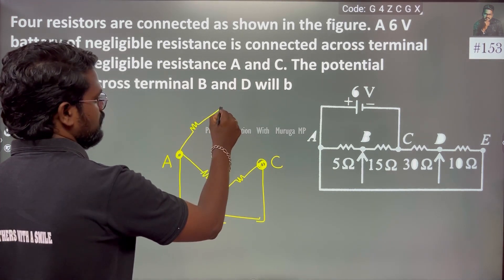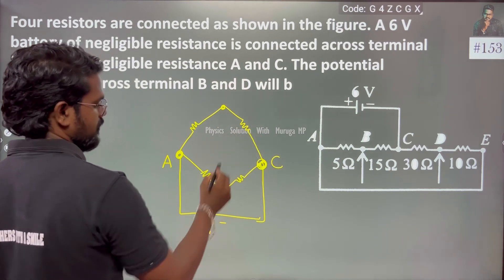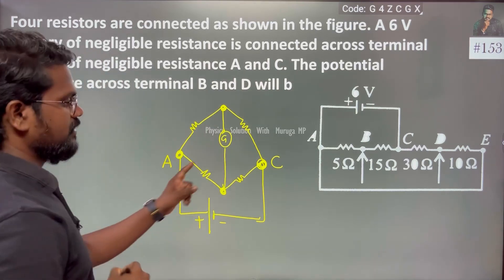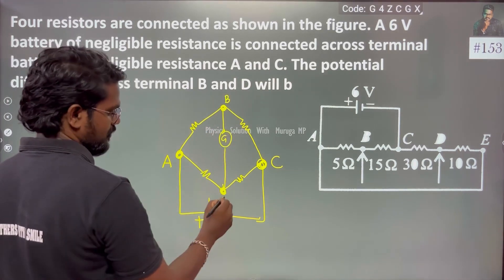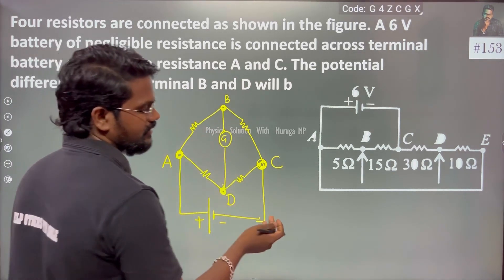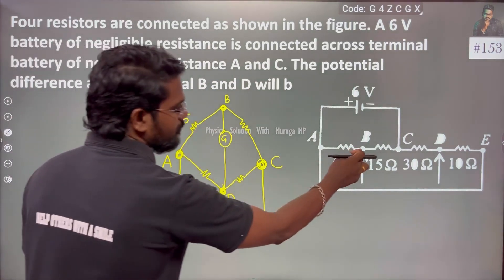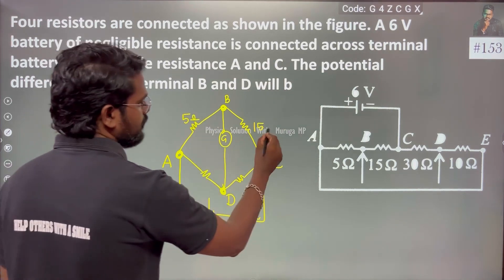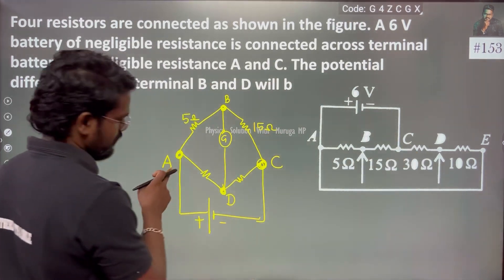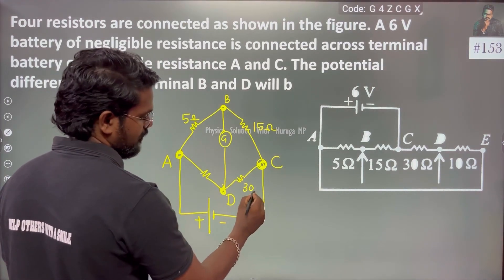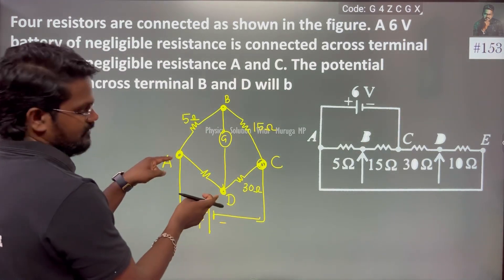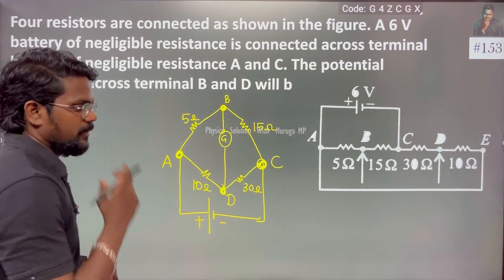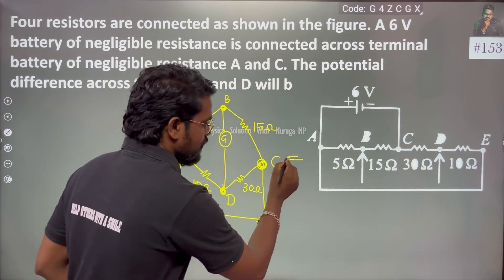This is a Wheatstone Bridge combination. The circuit has a galvanometer. Point A to B is 5 ohms, B to C is 15 ohms, A to D is 10 ohms — sorry — and C to D is 30 ohms. D and E form a complete circle. I will convert this circuit into a Wheatstone Bridge.